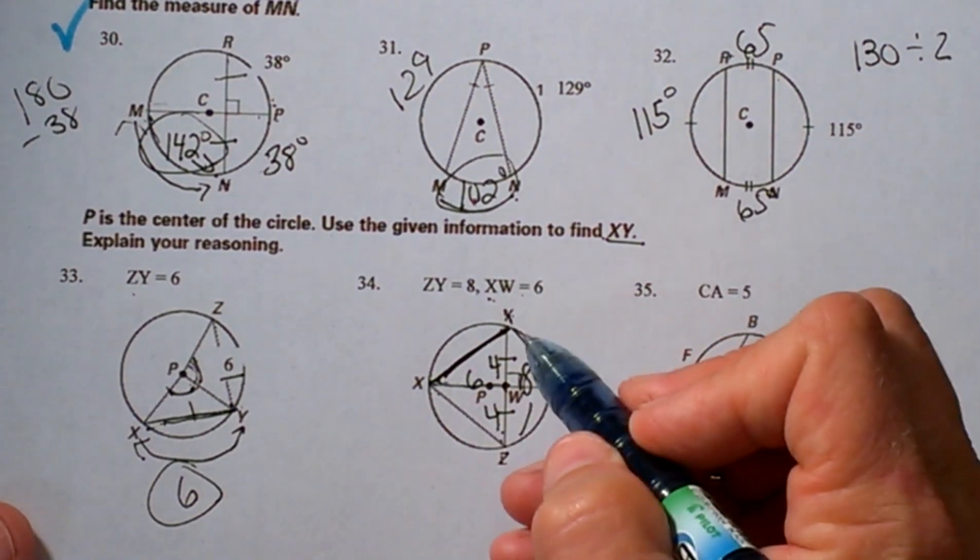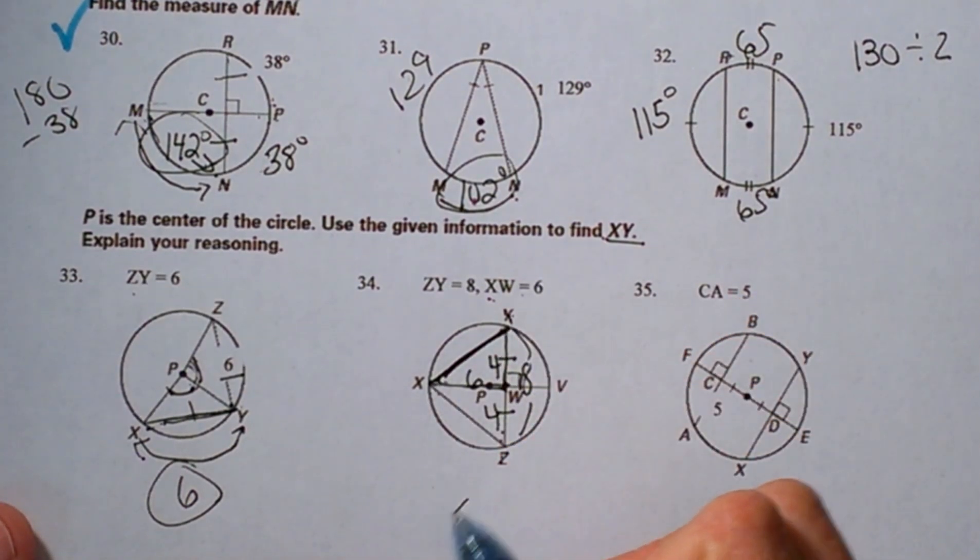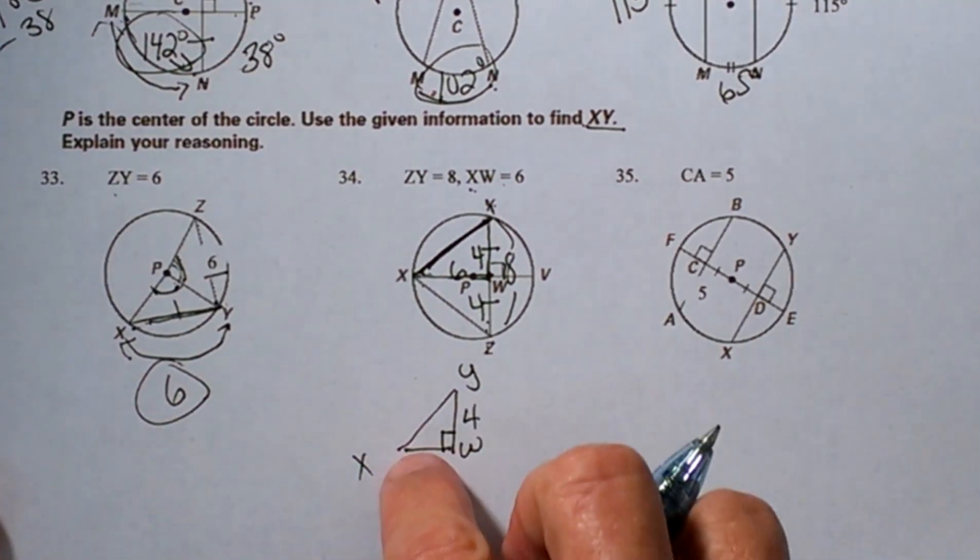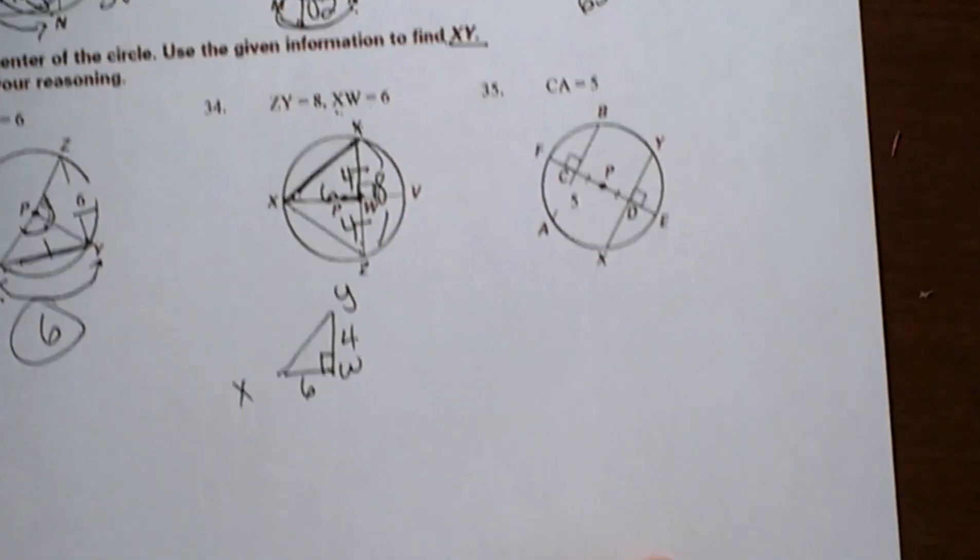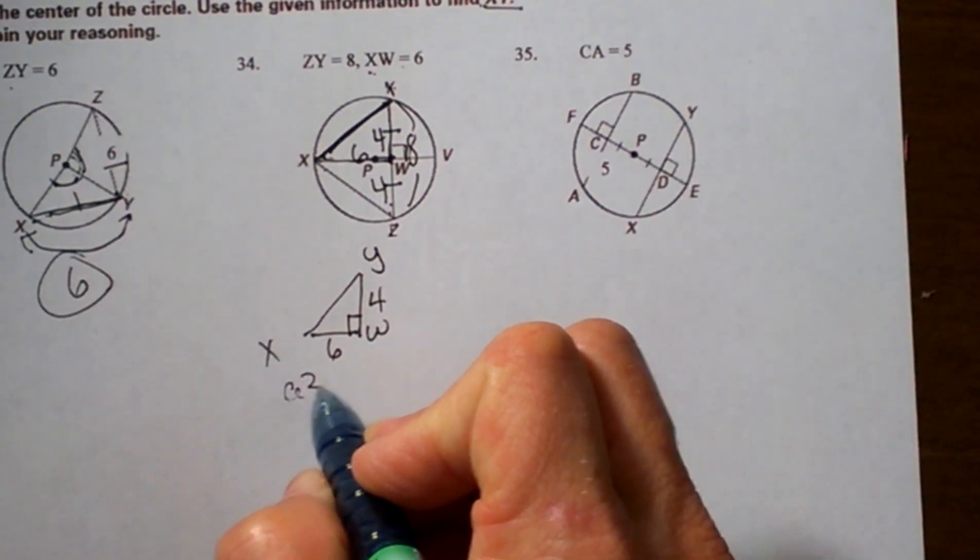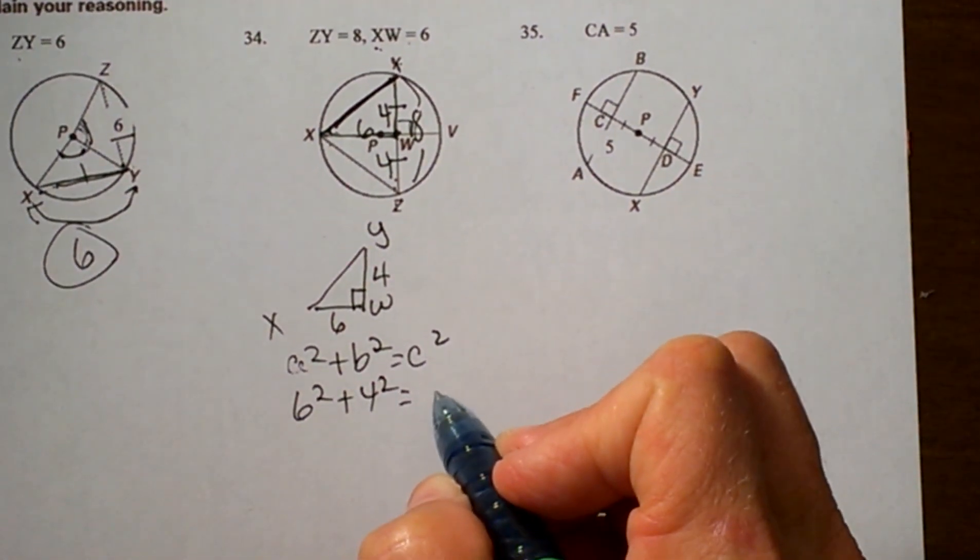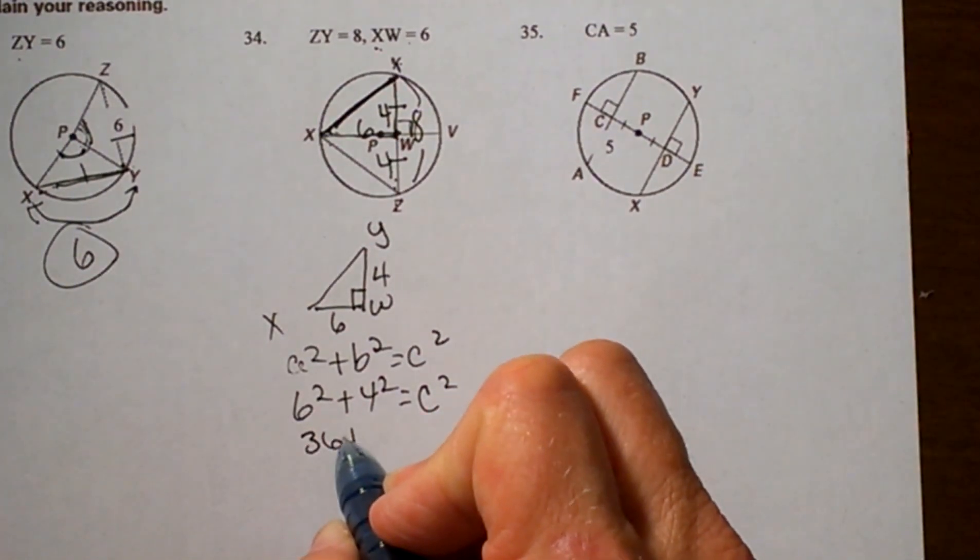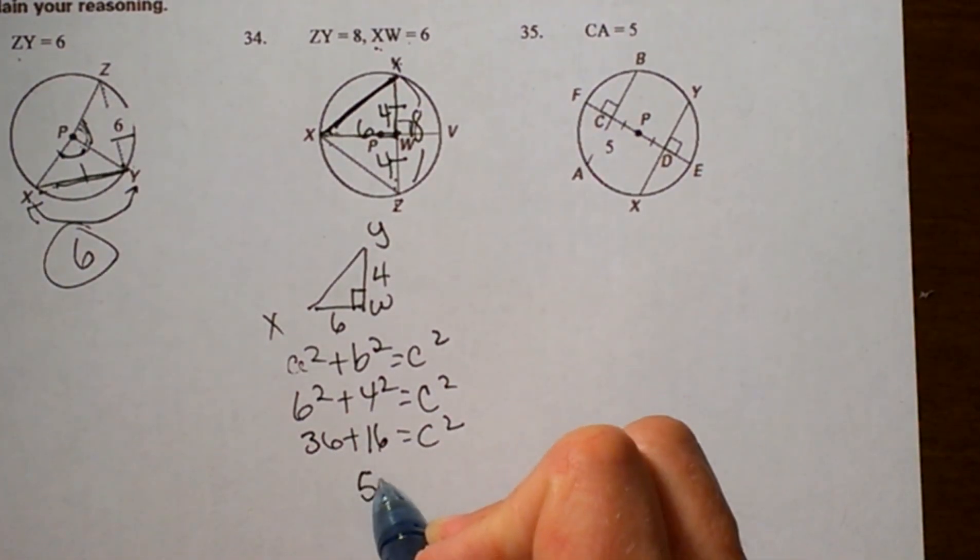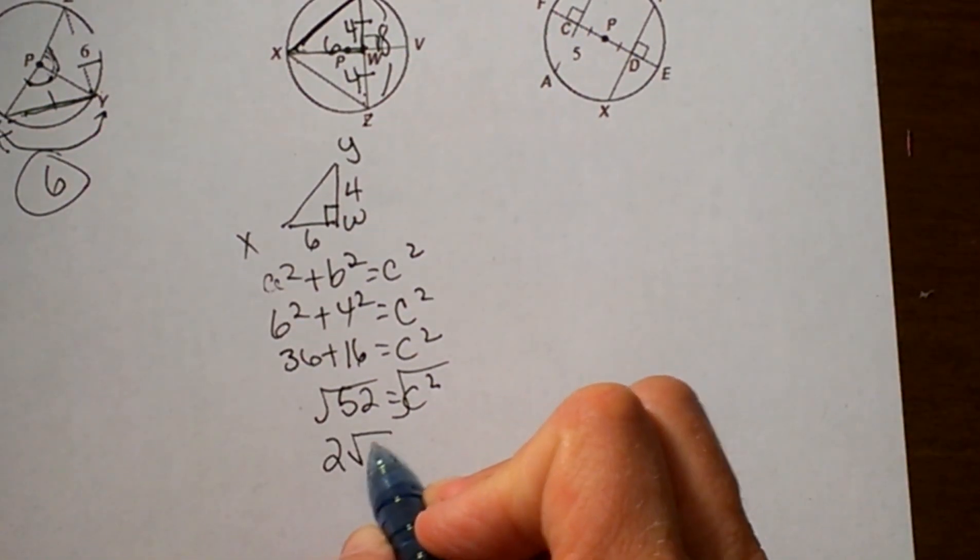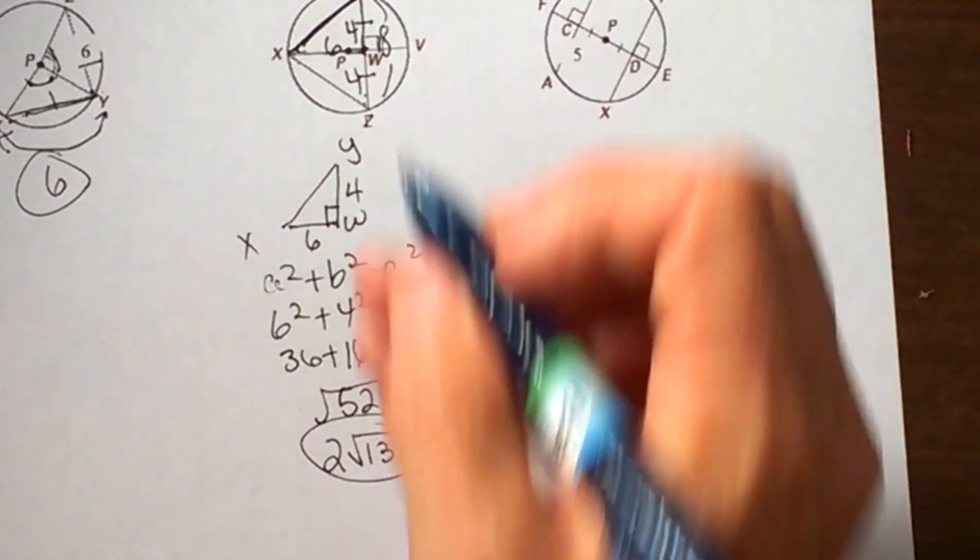XY is part of a right triangle. Do you see it? Right there. So I'm going to redraw that as WXY, where this is 6, this one is 4, and we don't know the hypotenuse. Well, how do you find the hypotenuse when you don't know it in a right triangle? You use the Pythagorean theorem. So let's do A squared plus B squared equals C squared. So 6 squared plus 4 squared equals our C squared. So 36 plus 16 is C squared, and that adds to 52. So it's the square root of 52, and that breaks down to 2 root 13. And that would be the length of XY.